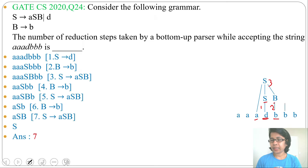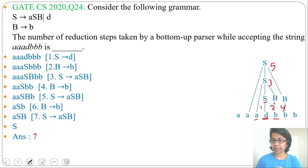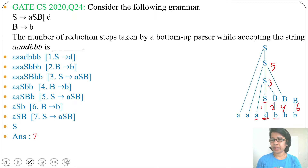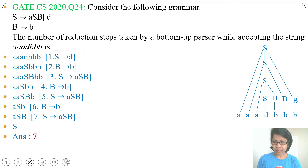Then again this B will be reduced to B — reduction number 4. Then again ASB reduces to S — reduction number 5. Then again this B will reduce to B — reduction number 6. Then again ASB will reduce to S — reduction number 7. So total 7 reductions.